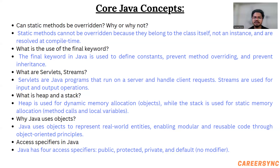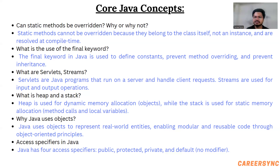What are access specifiers in Java? There are basically four access specifiers: public, protected, private, and default.